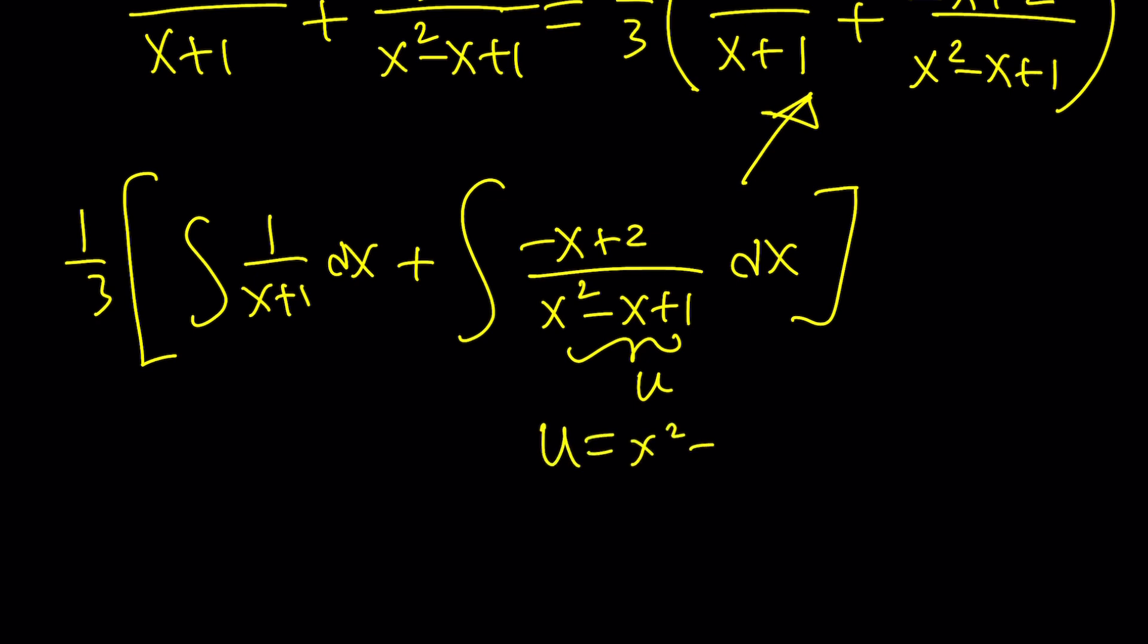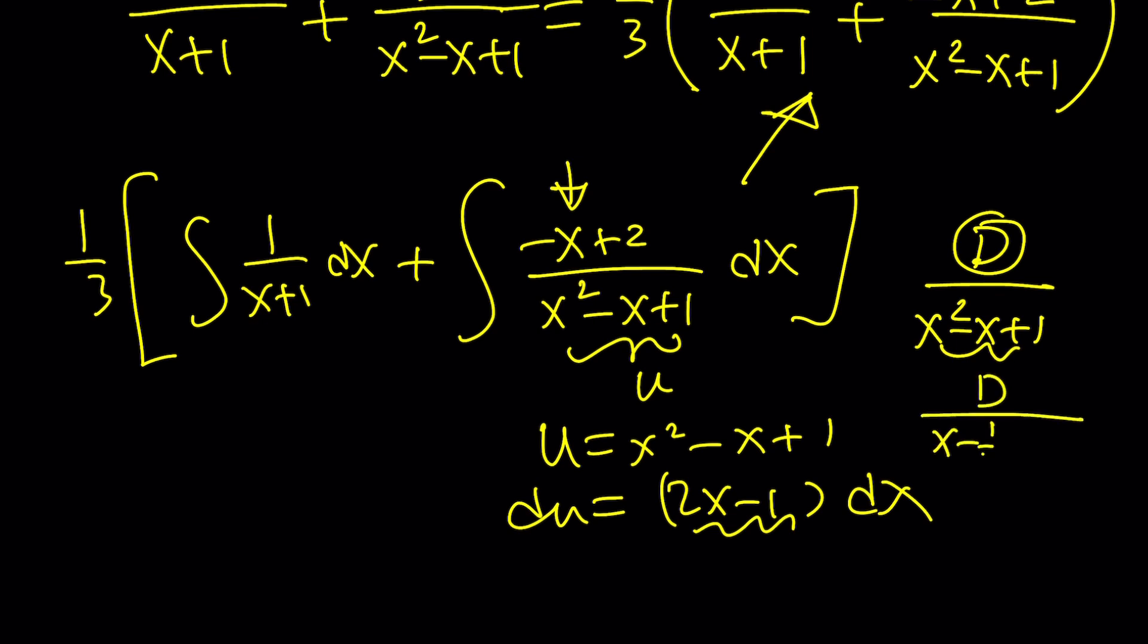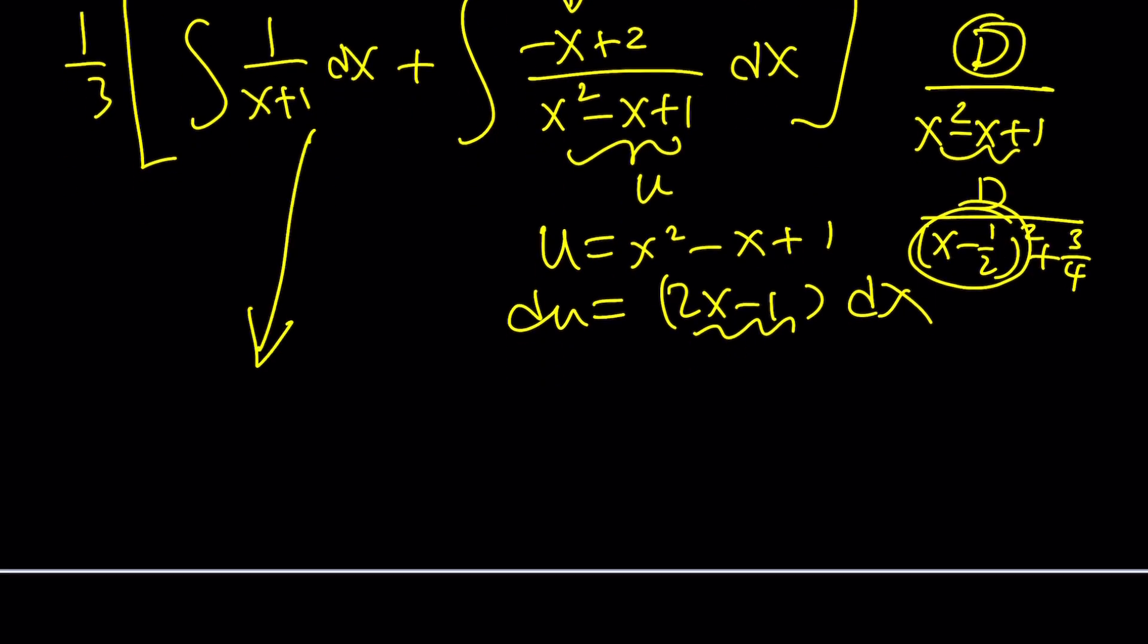If u is x squared minus x plus 1, then du would be 2x minus 1 dx. So you kind of have that, but not necessarily the same way. It's kind of like 2x, but we have negative x. We can turn it into 2x by multiplying and dividing by something, and that's going to give us a natural log. But you're going to have a leftover. And that leftover is going to give you some constant divided by... let's just call that constant d over x squared minus x plus 1. And this number here, the denominator can be written as x minus 1/2 squared plus 3/4. And guess what? That's going to give you the arc tangent because it's in that form. Anyways, to keep a long story short, the integral from here is going to give you the following.